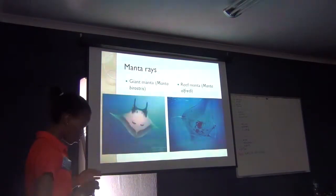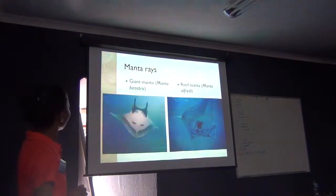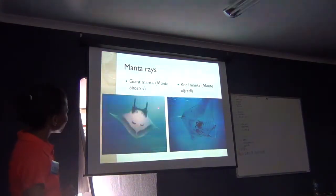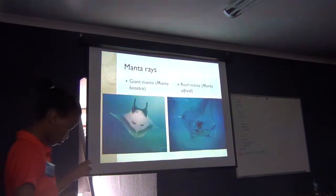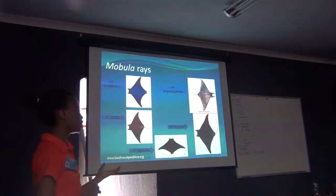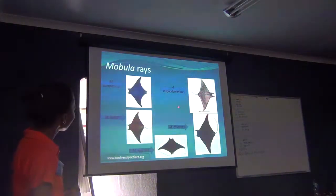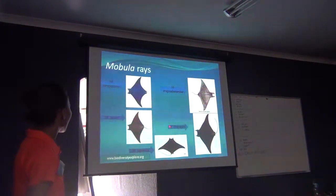Of those seven, we have two that belong to the genus Manta: the giant manta, Manta birostris, and the reef manta, Manta alfredi — those are the ones reported from South Africa. The remaining five fall under the genus Mobula: the longhorn Mobula eberti, Mobula erogoduitenki, Mobula thestoni, Mobula japanica, Mobula kuhlii, and Mobula tarapacana.